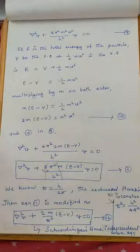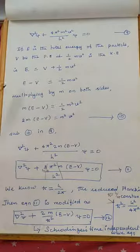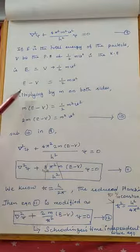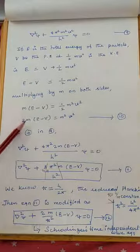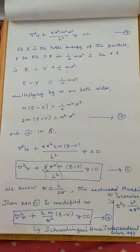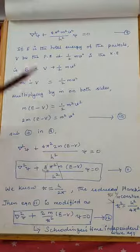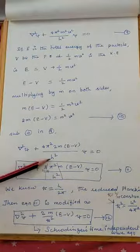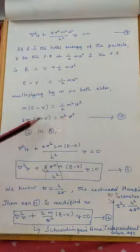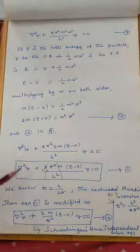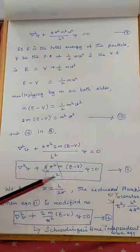Instead of m²v², we substitute 2m(E−V). So the equation becomes ∇²ψ + (4π²/h²) · 2m(E−V) · ψ = 0. Combining: 4 × 2 = 8, so the final expression is ∇²ψ + (8π²m(E−V)/h²)ψ = 0.